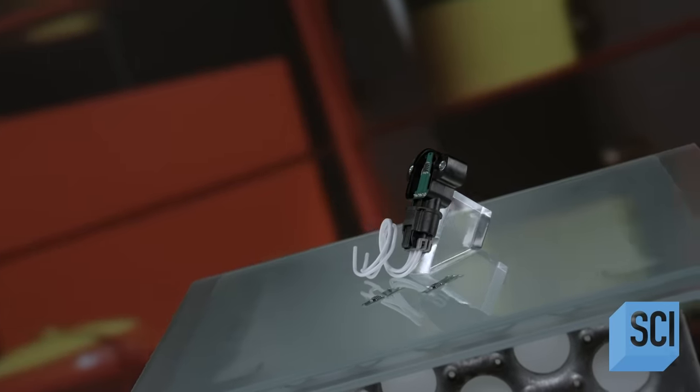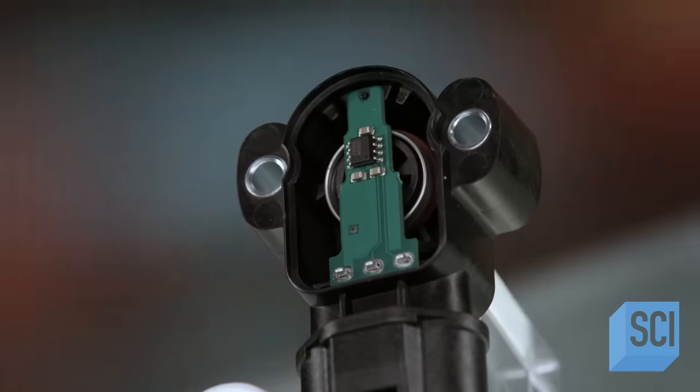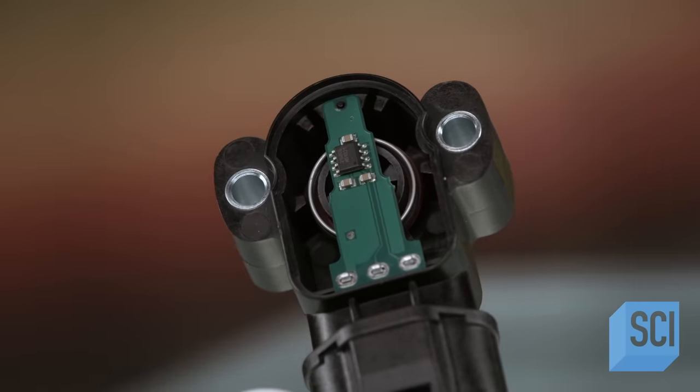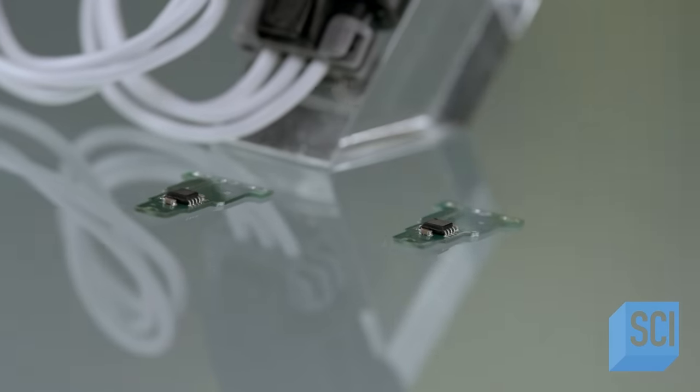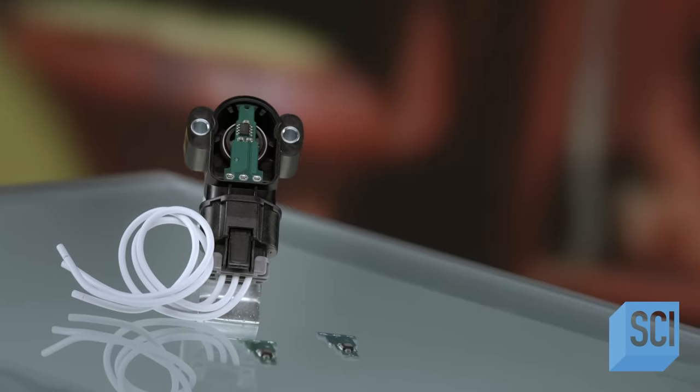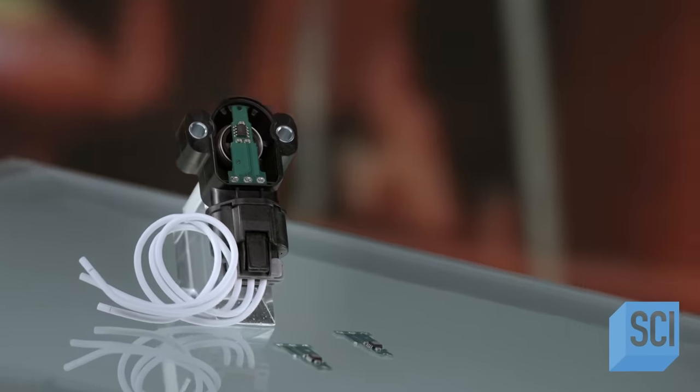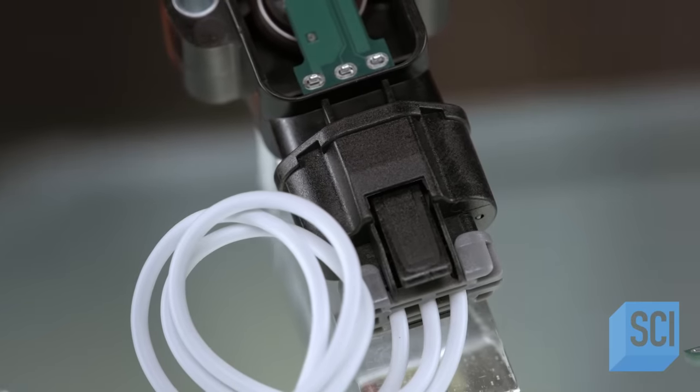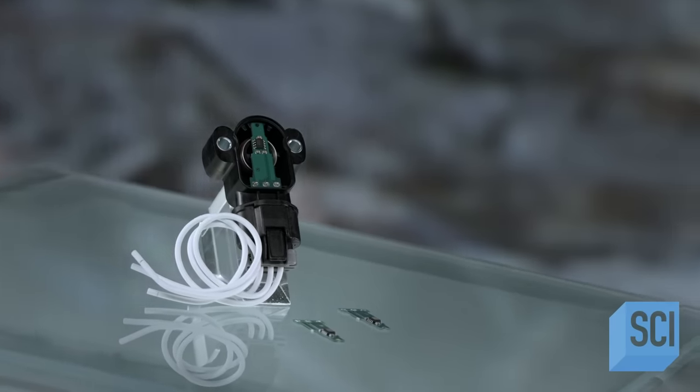A throttle position sensor reports the position of the throttle plate to the engine computer so that it can decide how much fuel to inject into the engine and many other things. Without this critical sensor, the ratio of the air fuel mix would be compromised and the engine would likely stall.